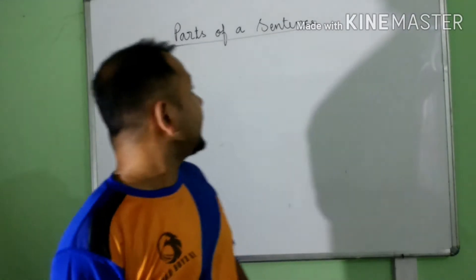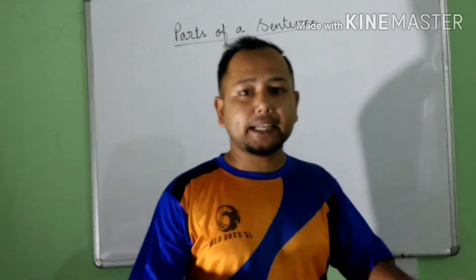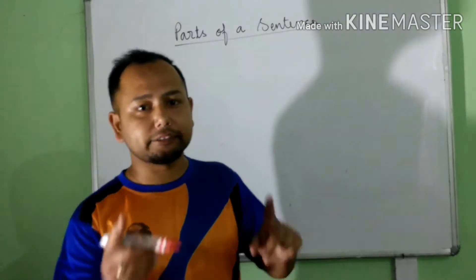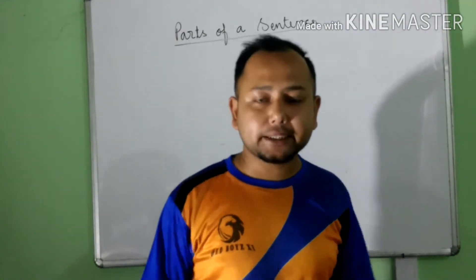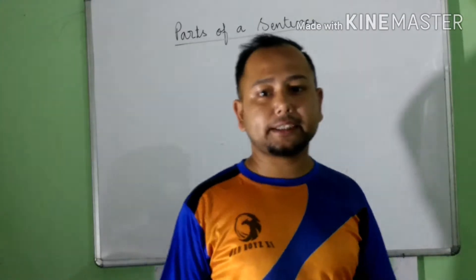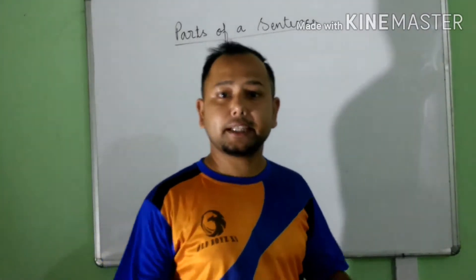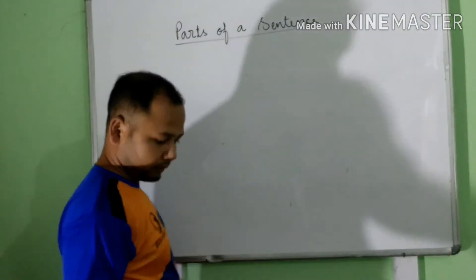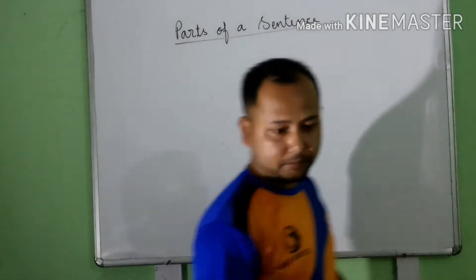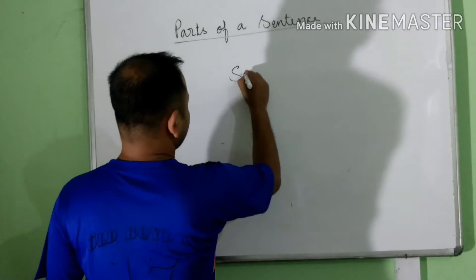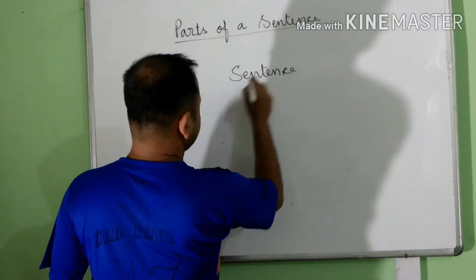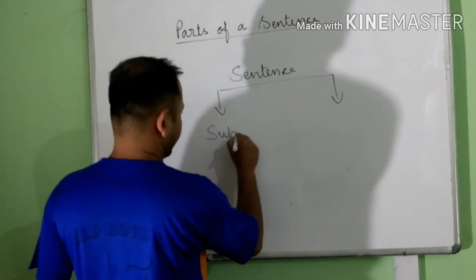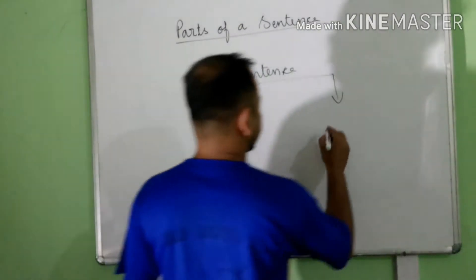Today we will study about the parts of a sentence. Basically, a sentence is divided into two parts: subject and predicate. All sentences are divided into these two parts — subject and predicate.